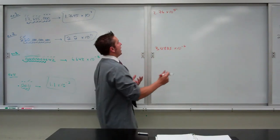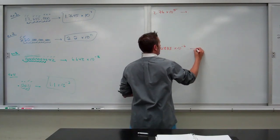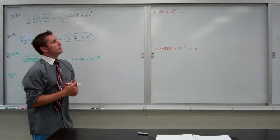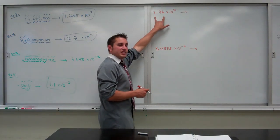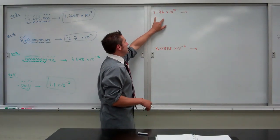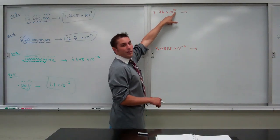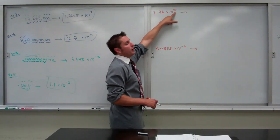If I wanted to change these back to their original form, all I would do is look at the number of sig figs in the number, and then move the decimal either to the right or the left, the number of the exponent.